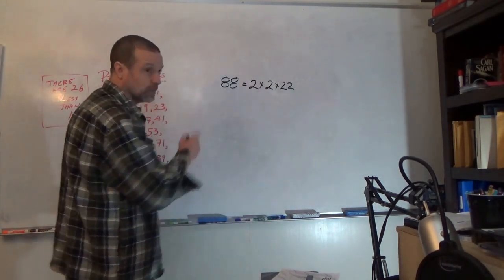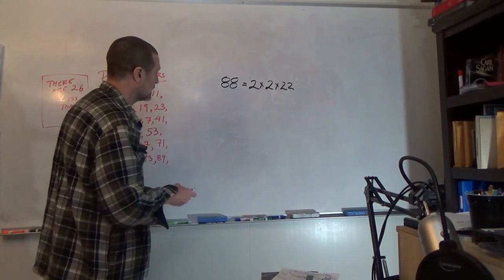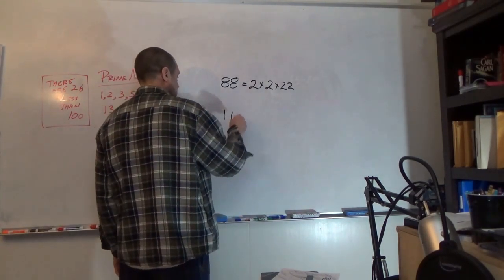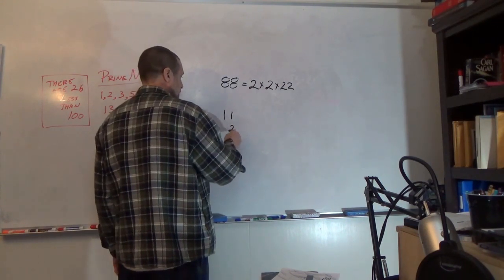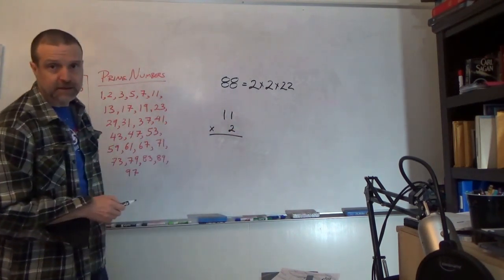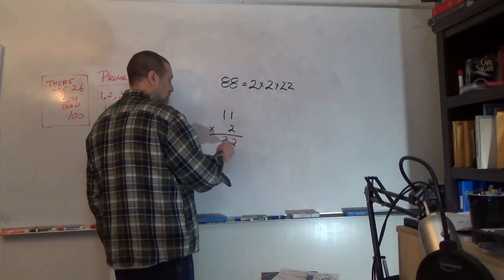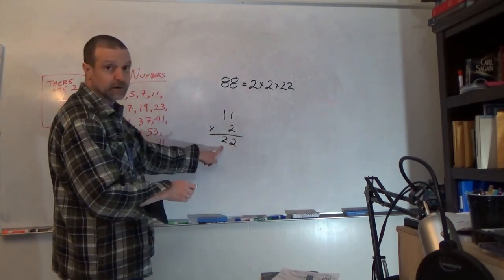So we need to figure out what makes 22 work, and again, I'll point out, based on my experience, that 2 times 11, 2 times 1 is 2, 2 times 1 is 2, is 22.